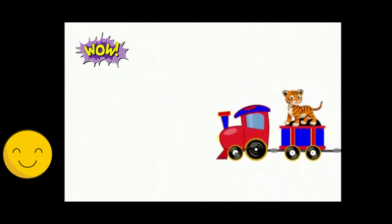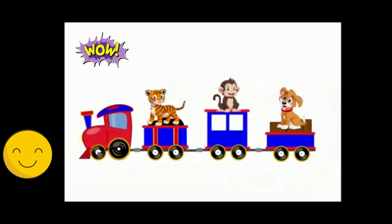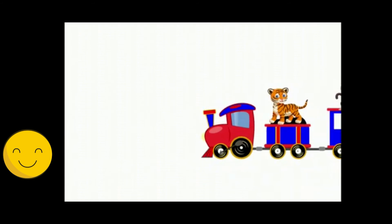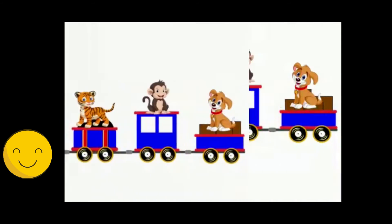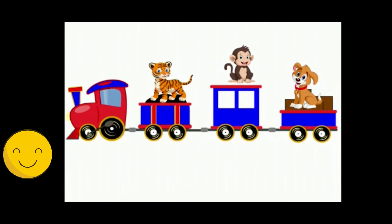Look at the picture. Wow, this is a train. Can you see a train? Yes. And we can even see a tiger, a monkey and a dog on the train.